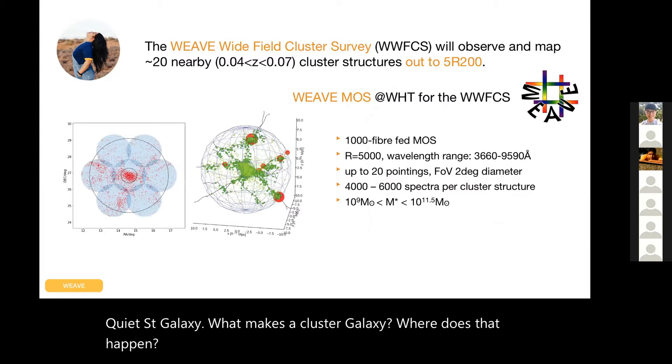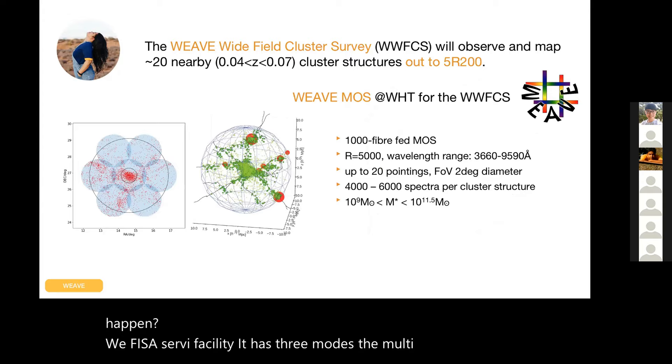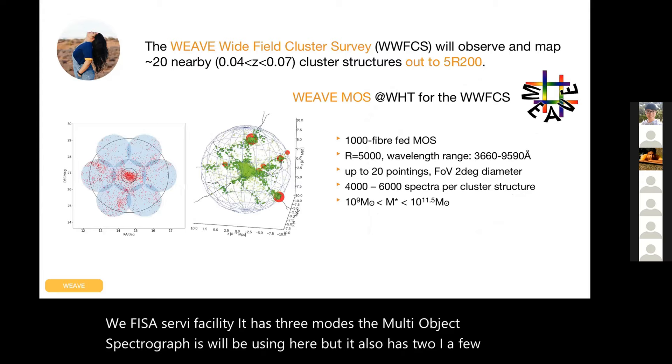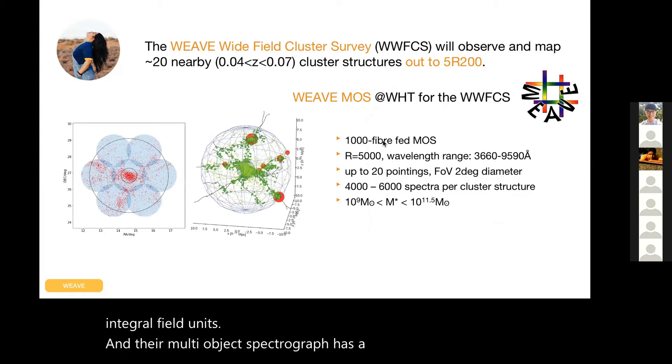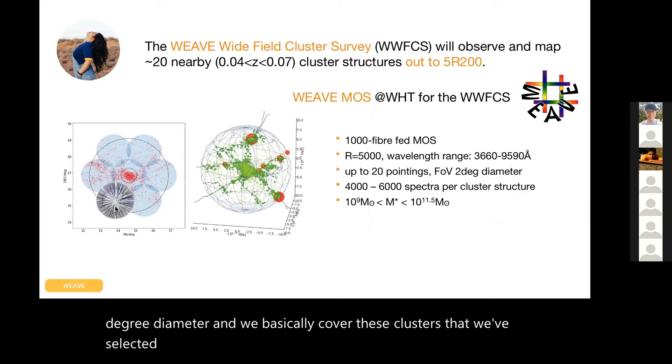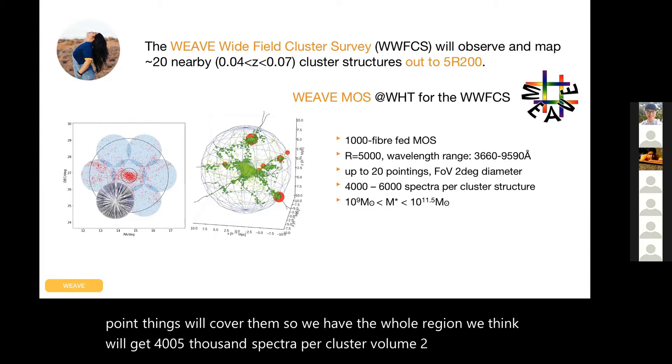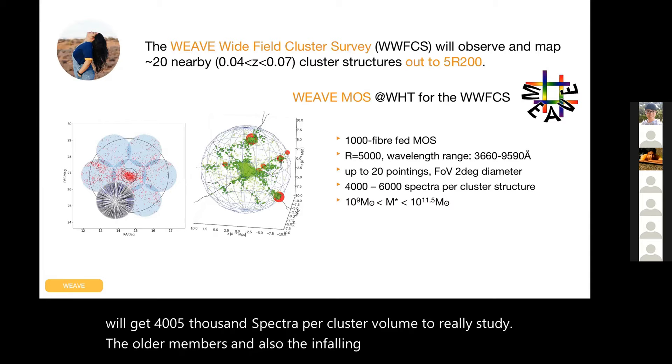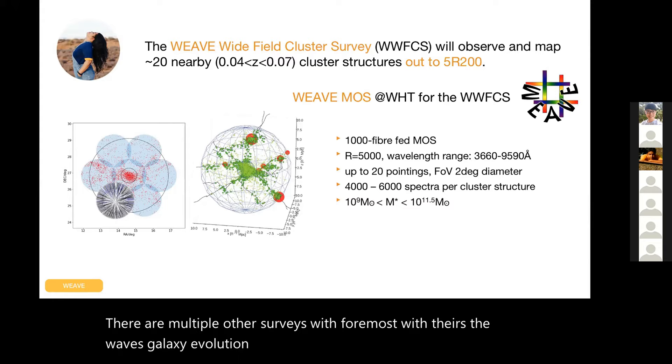WEAVE is a survey facility with three modes. The multi-object spectrograph is what we're using here, but it also has two IFU integral field units. The multi-object spectrograph has 1000 fibers, about two degree diameter, and we basically cover these clusters that we've selected with many of these pointings, each 1000 fibers. Up to 20 pointings will cover them, so we have the whole region. We think we'll get 4000-5000 spectra per cluster volume to really study all the members and also the infalling galaxies. There are multiple other surveys - with FOREMOST, there's the WAVES galaxy evolution survey, CHANCES - this is really a topic of investigation in galaxy evolution in the near future. Currently we're taking this closer to observations, really configuring all the simulations, going through the whole OB cycle of our simulated observations to see how fiber collisions impact filament finding.